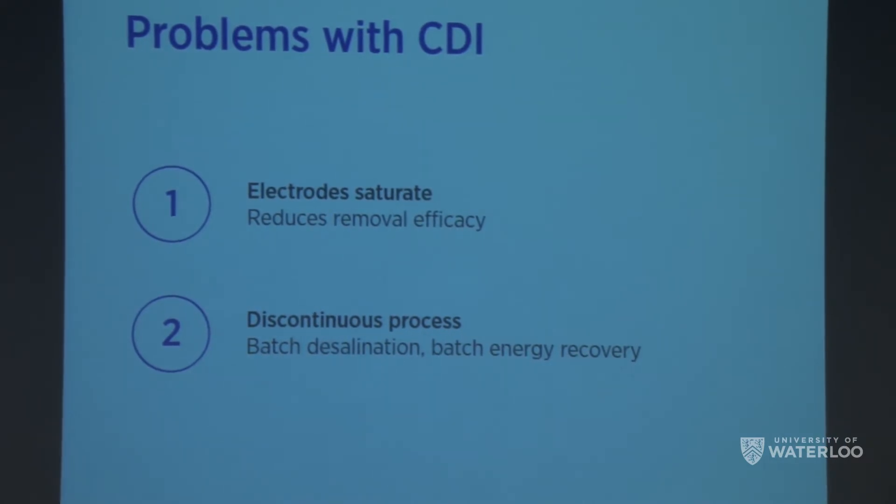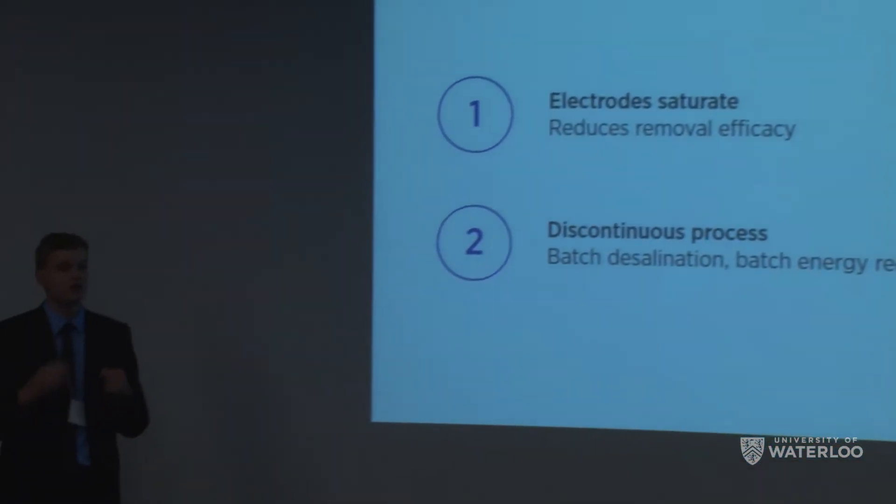However, there are a couple of problems preventing this. First, electrodes saturate: as ions diffuse in, the electrode gets covered in salt and can't perform as well. This leads to a discontinuous process — you need to shut down the cell, reverse the potential, expel the salt into a waste feed, and flush it away. We propose a solution in the form of a flowable electrode: instead of a solid-state carbon electrode, we use a slurry of suspended activated carbon particles as a high-porosity flowable electrode that we can simply pump out once saturated. In addition, continuous energy recovery is possible: a second cell with reverse potential can put the collected salt back into a waste stream, recovering current and feeding it back to the original cell for drastic energy savings.